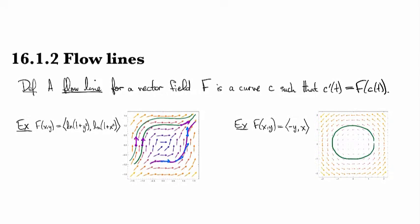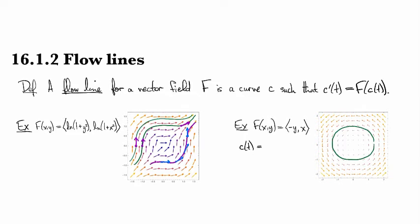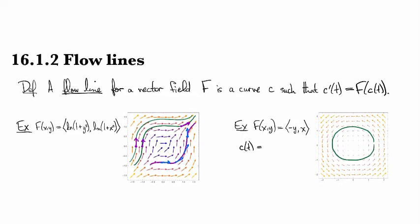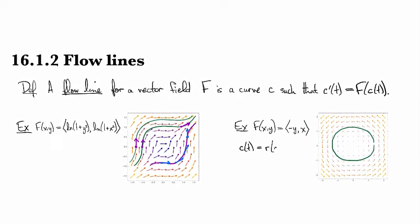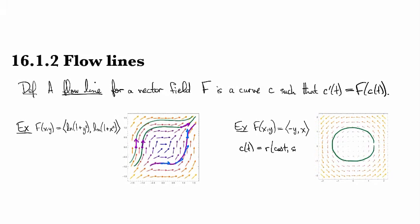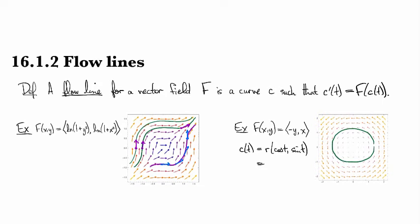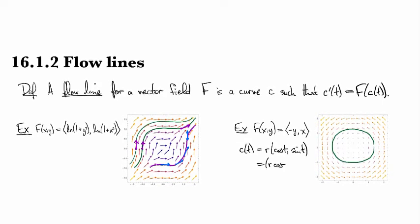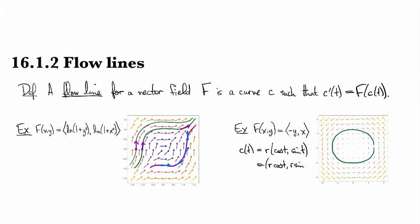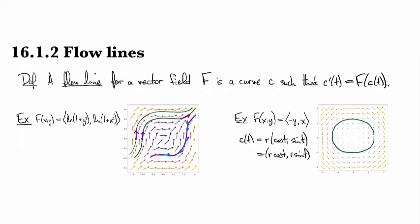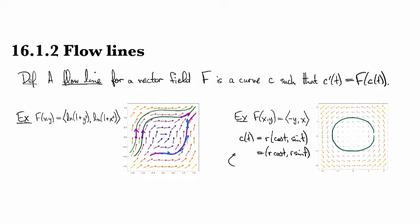The flow lines for this one, c of t, are equal to and then there's going to be some coefficient cosine t, sine t. If I were to multiply the coefficient in it would be like r cosine t, r sine t. How do we check that these are flow lines?